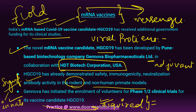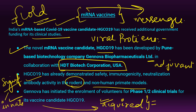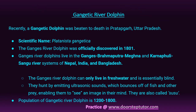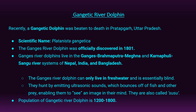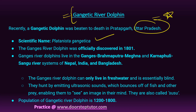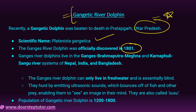For prelims, remember: how vaccines work, the working of the immune system, what mRNA is, and potential applications of mRNA vaccines. Another important topic is the Gangetic River Dolphin. Recently a Gangetic River Dolphin was beaten to death in Pratapgarh. Its scientific name is Platanista gangetica. The Ganges River Dolphin was officially discovered in 1801, and killing it is a punishable offense under the Wildlife Protection Act of 1972.